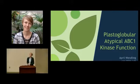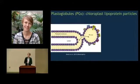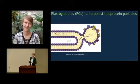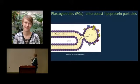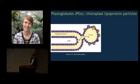So what are plastoglobules? Plastoglobules are plastid lipoprotein particles that are surrounded by a lipid monolayer membrane. As you can see here, in chloroplasts they are attached to the thylakoid membrane.